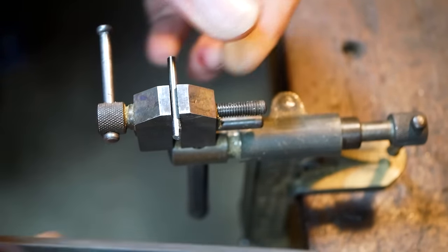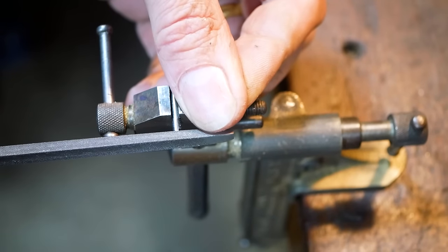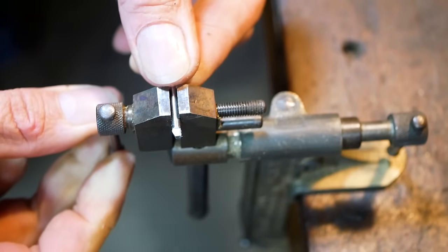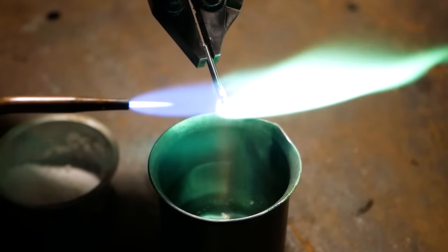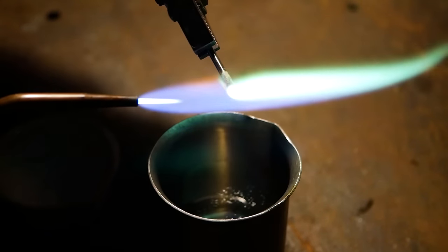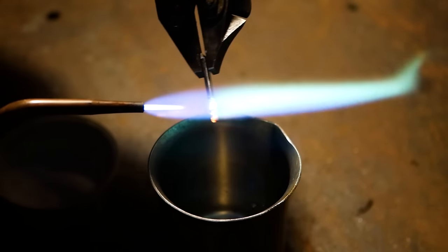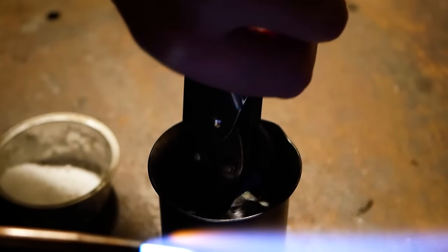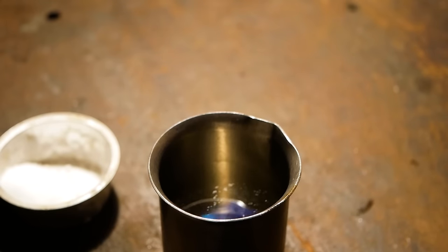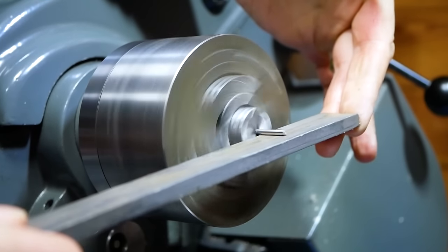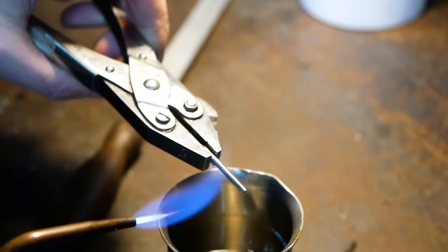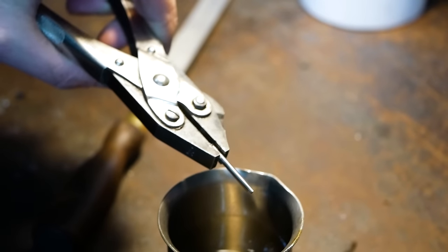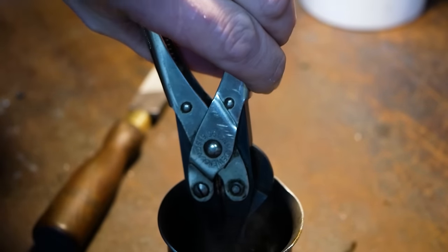He begins by making the screw cutting tool from the same high carbon steel used for the screw itself. This means that Alistair can file the tool roughly to shape and then heat treat it as before. However, after the initial hardening phase rather than tempering all the way back to blue he tempers the tool to a straw color instead. This is harder than the blued steel but soft enough to minimize the risk of the tool chipping from being too brittle.